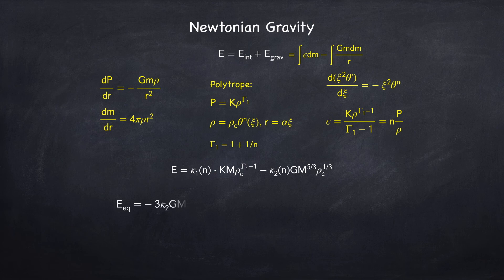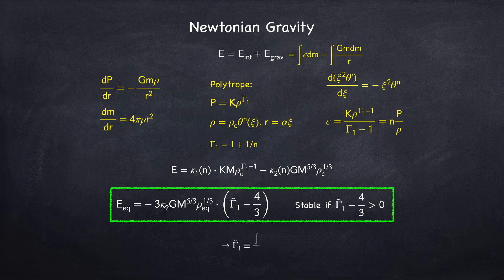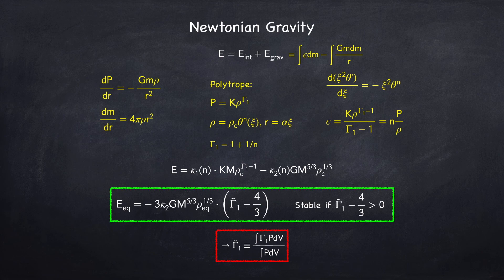We then found the equilibrium energy was proportional to gamma 1 minus 4 thirds, and that stability held if gamma 1 was greater than 4 thirds.